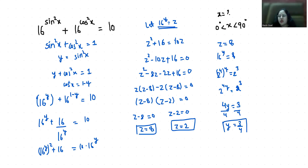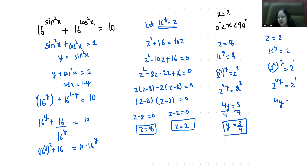For the second case, z equals 2. So 16^y equals 2, which means 2^(4y) equals 2^1. Therefore 4y equals 1, and y equals 1/4.